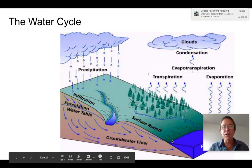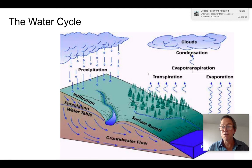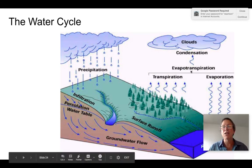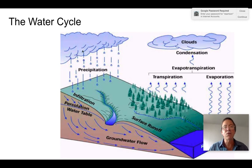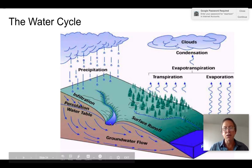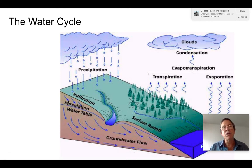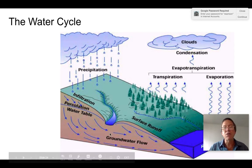Here's the full water cycle diagram: evaporation and transpiration — evapotranspiration together — move upward because of convection caused by the expansion of heated air. As air cools it condenses into clouds, a convection system is set up, and clouds move and precipitate when too heavy with moisture. We get surface runoff across the ground and in streams, and percolation — another word for infiltration. The water joins the groundwater below the water table, and some groundwater recharges streams and lakes.